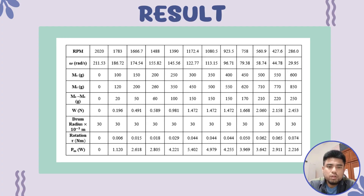Assalamualaikum warahmatullahi wabarakatuh. My name is Luman Aqib El-Uman, metric number CF210001. After performing the turbine Pelton test by following the established procedure, the following data has been obtained and recorded: rotation per minute, mass 1, mass 2, time, and radius of the drum. Volume and pressure are constant. Based on the recorded data, we must obtain the value of mechanical power and water power in watts.